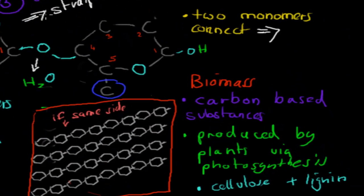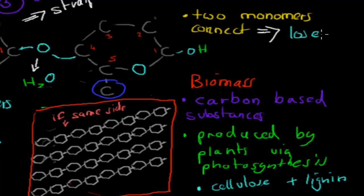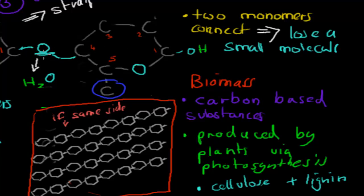The second part of this dot point is to identify cellulose as an example of a condensation polymer found as a major component of biomass. A condensation polymer forms when two monomers combine and lose a small molecule, often water. In this case, two glucose molecules connect and a water molecule is lost, so cellulose is definitely an example of a condensation polymer.